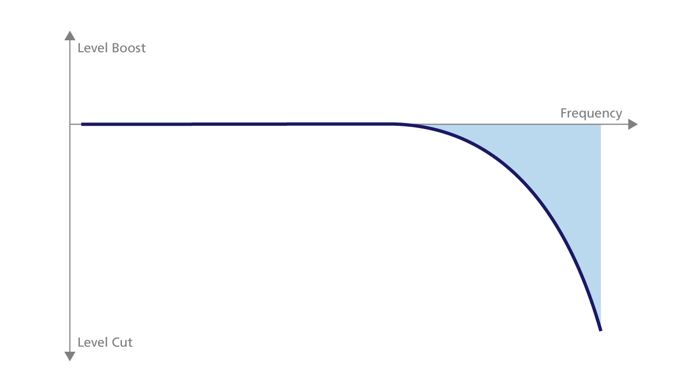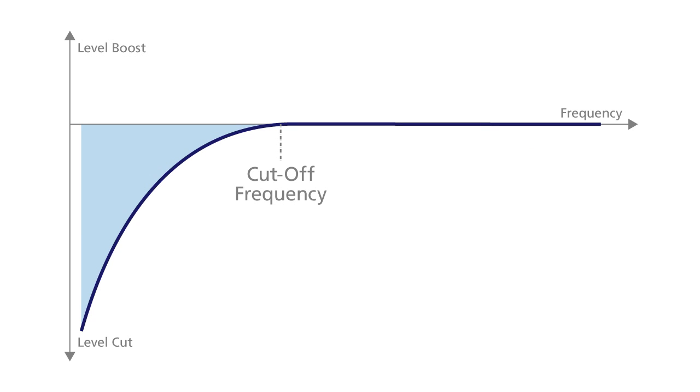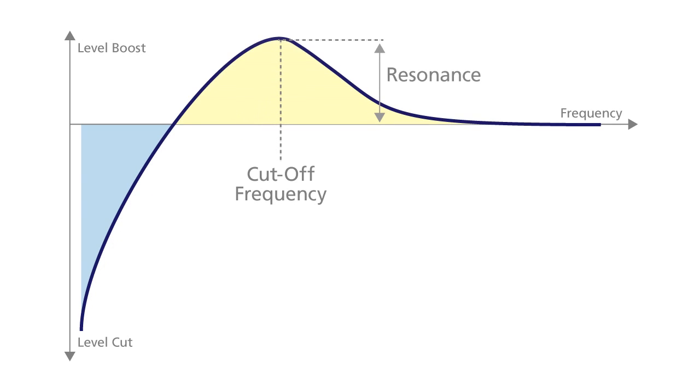As you can hear, the sound with the resonance is very different. This is because the cutoff frequency that is being controlled by the envelope is now emphasised by the resonance. And of course, resonance can be applied to high pass filters too. When this happens, the lower frequency end of the spectrum gets boosted. The effect can be more subtle than with a low pass filter, but you can also use resonance in a high pass filter to get some real floor shaking bass sounds if you want.